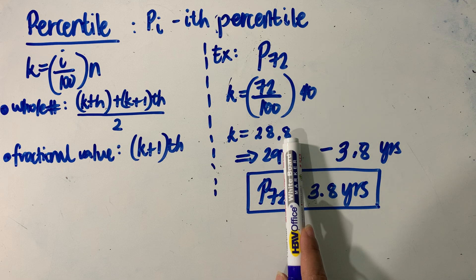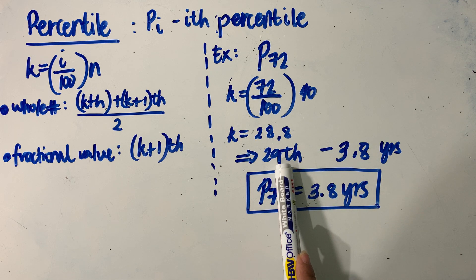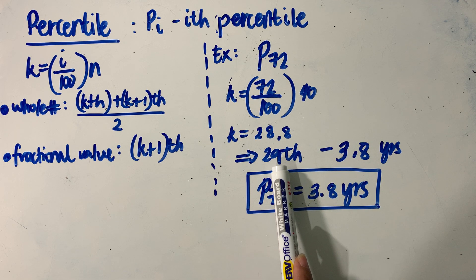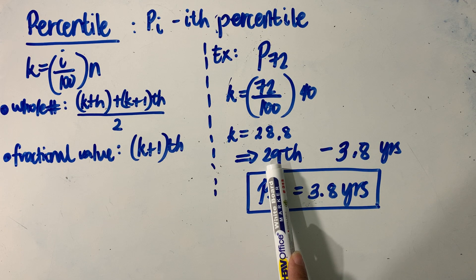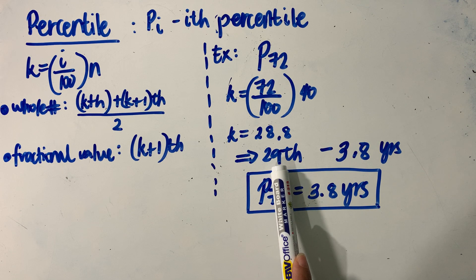In this case, if it is 28.8, rounding it up, the next integer will be 29. This means we will get the 29th data value in our observation.